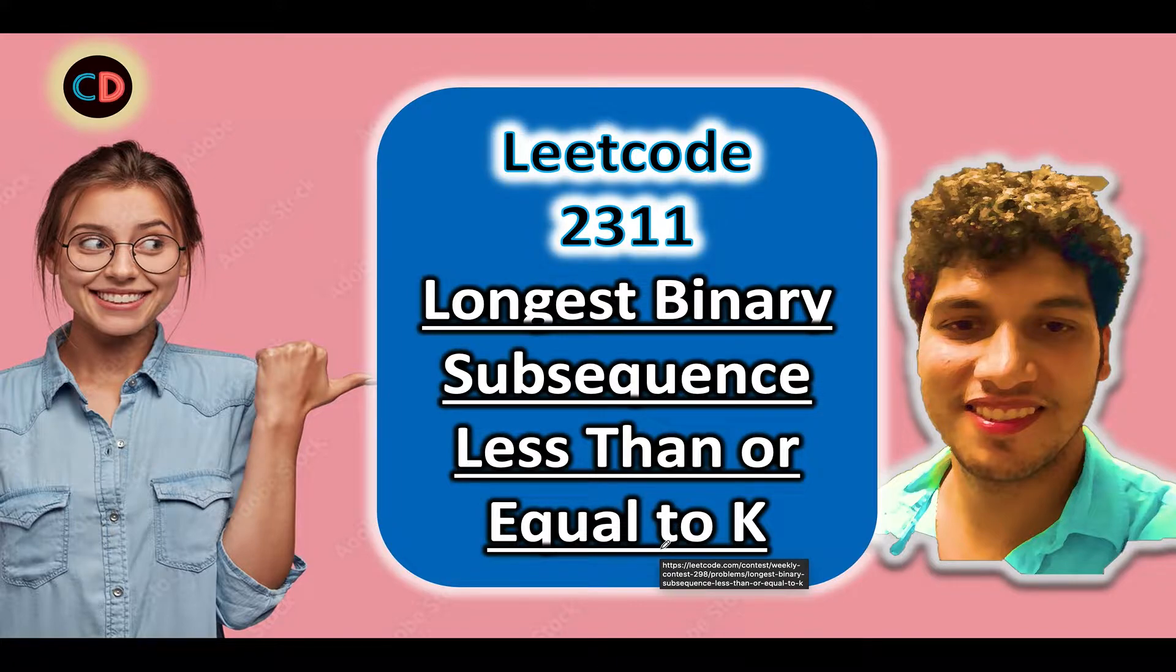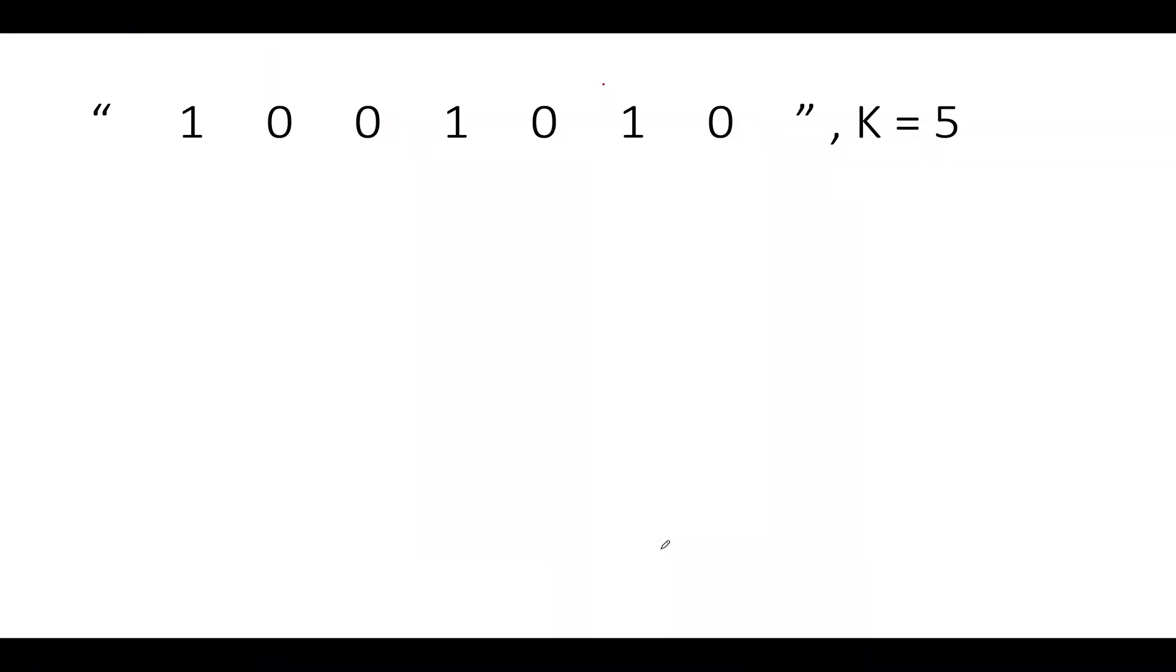It's a medium level question on LeetCode and I agree with that rating. If you have any doubt understanding this question or want to ask anything, feel free to message on the Telegram group or Discord server of Coding Decoded - both links are in the description. Now let's get back to the example. The input string given to us is 1001010 and the value of K is 5.